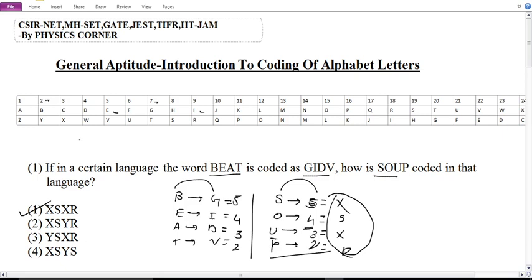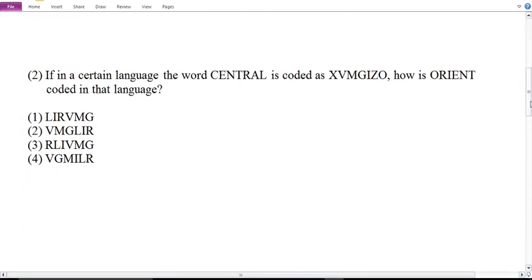So I am giving this box to this box, because we have no number defined. Now, let's see an example. In a certain language, CENTRAL is coded as this and how ORIENT is coded in that language.